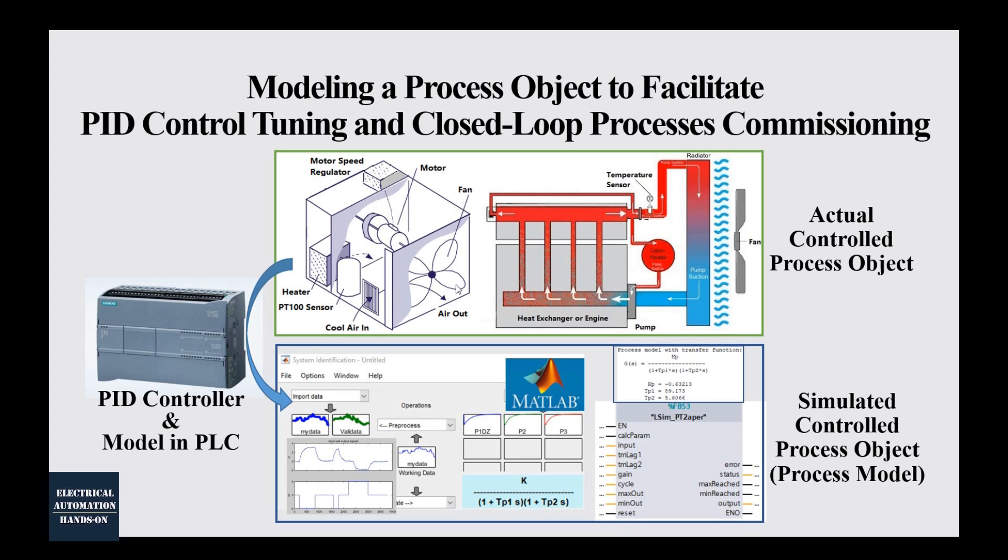And certainly, I use this one actual controlled process object, that is a cooling and heating system. Also, I'm using the PLC, one real PLC project to implement all those procedure and implement this method. Basically, it shows this procedure is workable, reliable, and possible. If one day you have one actual process object to do the test, so you can follow those procedures.